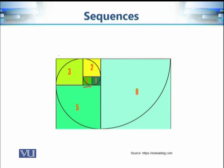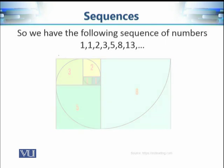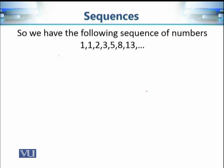Assume this side is one, then this side is also one, so this side is two because one plus one is two. Similarly, two plus one is three, so the side of the third square is three. Then each side of the next square is five, and the next is eight, and so on. So the numbers one, one, two, three, five, eight form a kind of sequence.